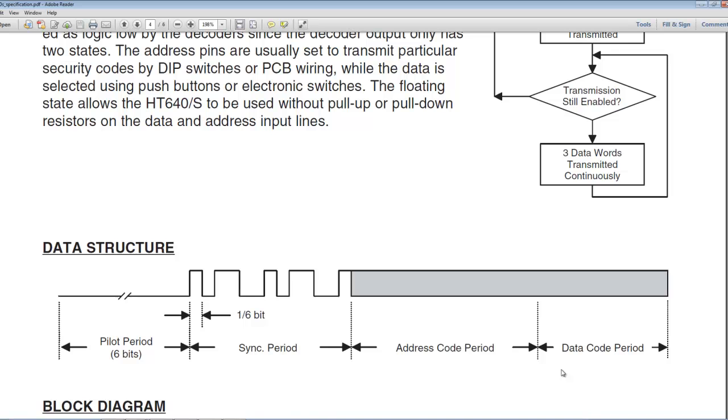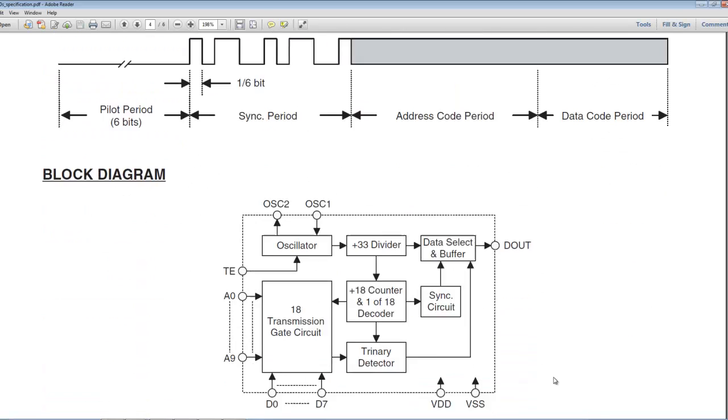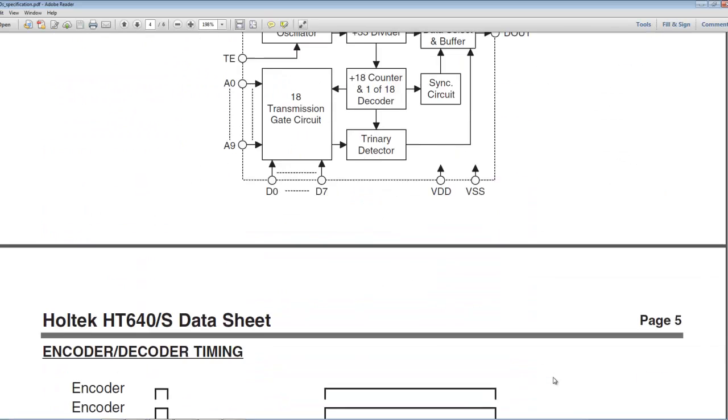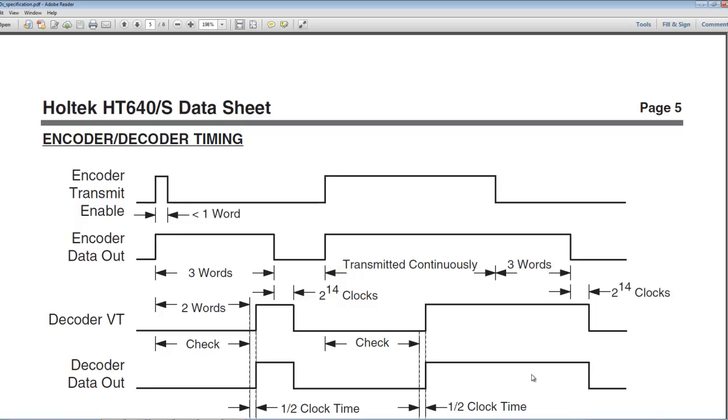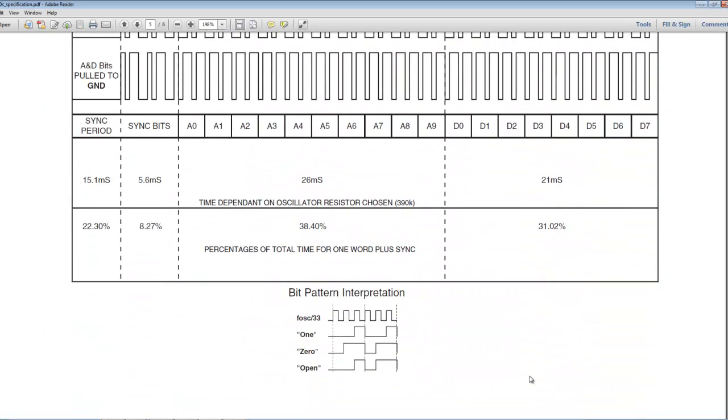When I say pulse width modulation, I mean that the key fob transmits a sine wave for the duration of each pulse, which determines whether the bit received is a 0 or a 1.